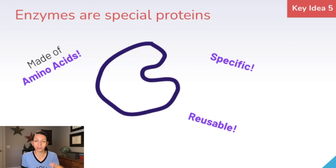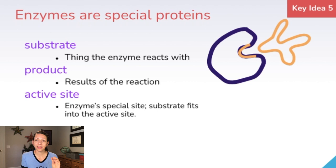Basically, enzymes lower the activation energy of a reaction in order to get it to happen faster. A few enzyme vocabulary words: a substrate is the thing the enzyme reacts with; a product is the result of an enzymatic reaction; and the active site is the special location on the enzyme where the substrate fits in.